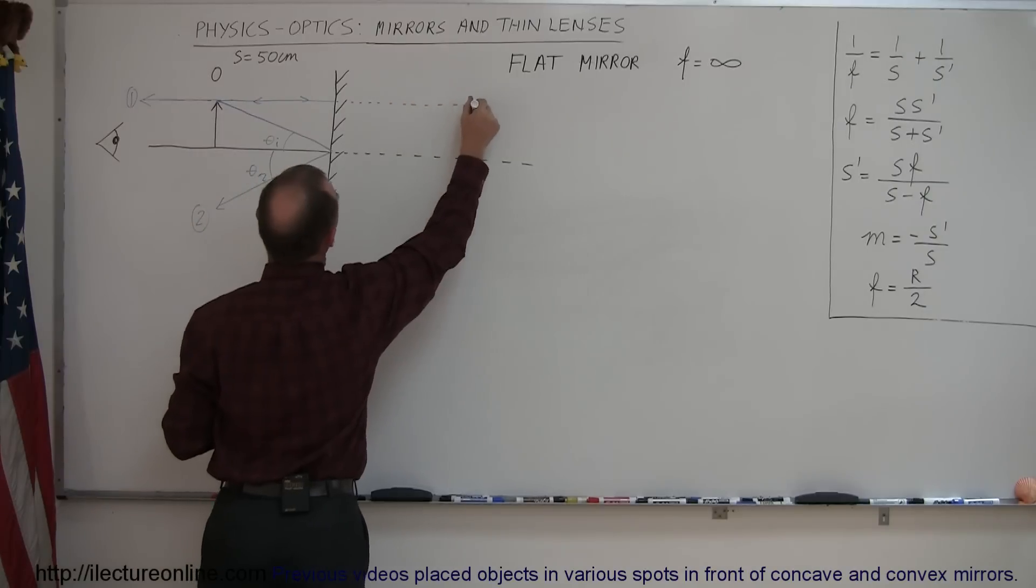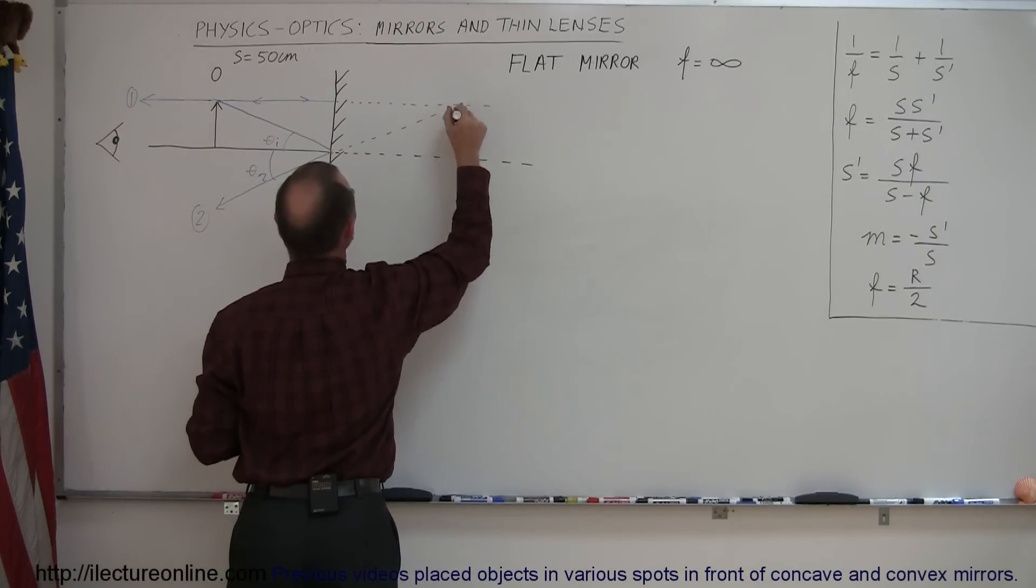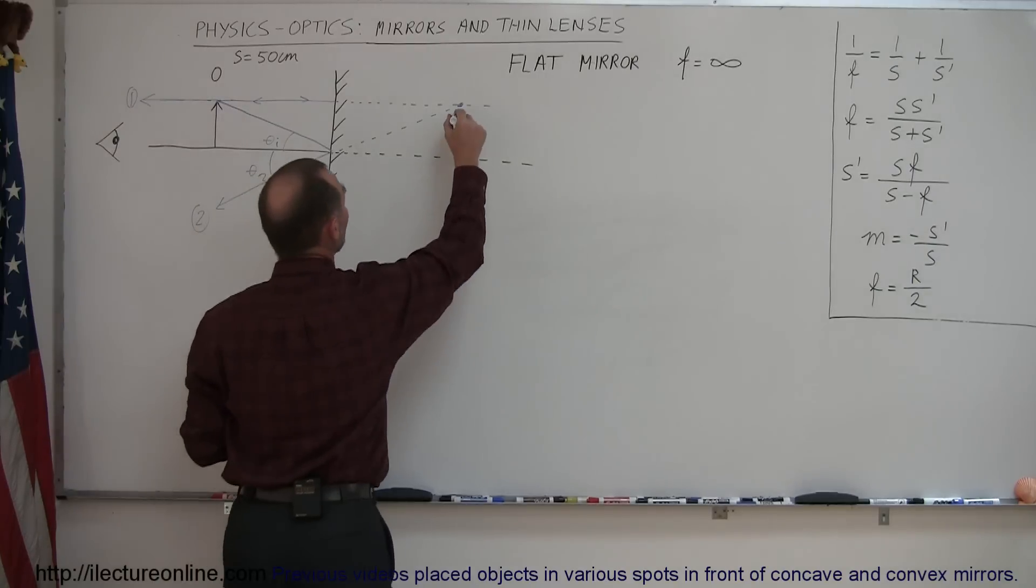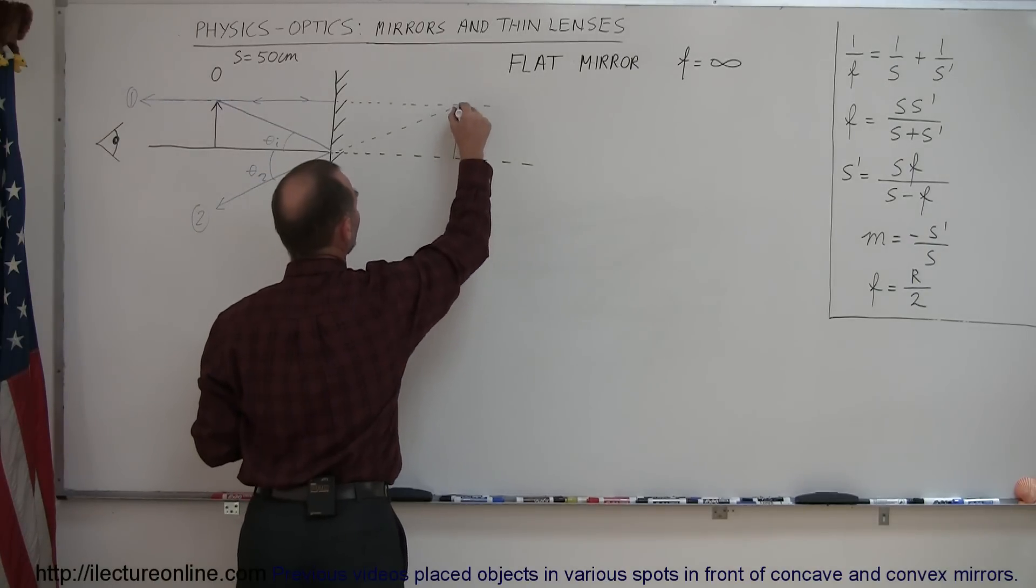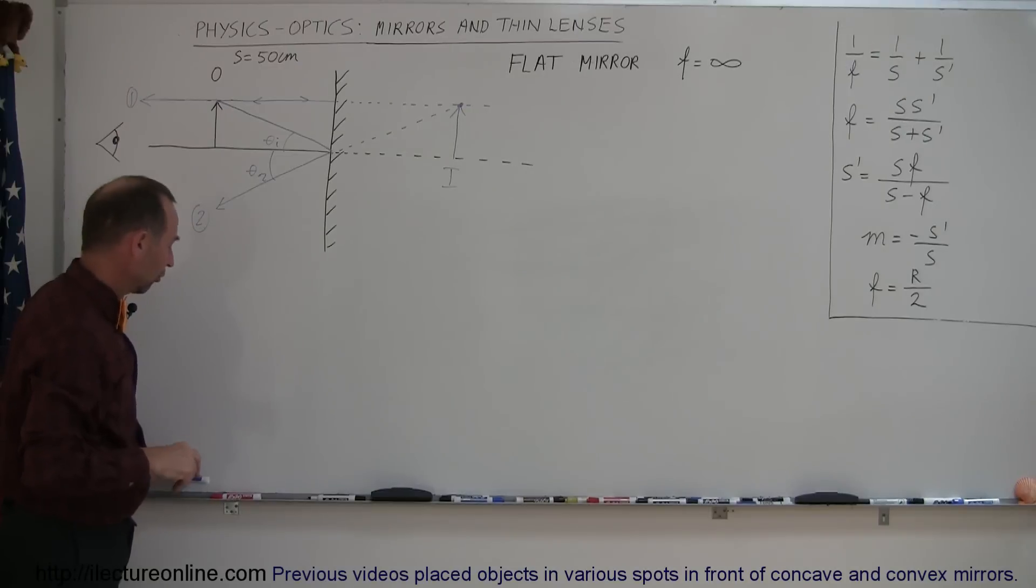Oh, I know that this one came from back here somewhere, and this one came from back here somewhere, and where those two points converge, the brain will assume and actually see an image there. So, there's the image, and, of course, it's behind the mirror, so we have the suspicion that that image is virtual, not a real image.